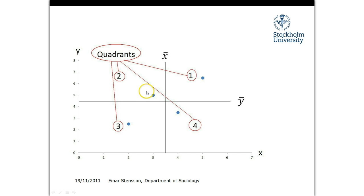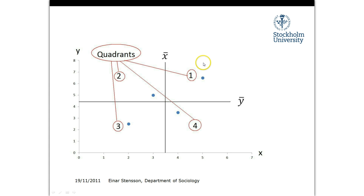To begin with, we're going to talk about how we're defining our data here. We're dividing our area — our scatter plot as we call it — into four different parts, and we call these quadrants. This is the first quadrant, this is the second quadrant, this is the third quadrant, and this is the fourth quadrant.